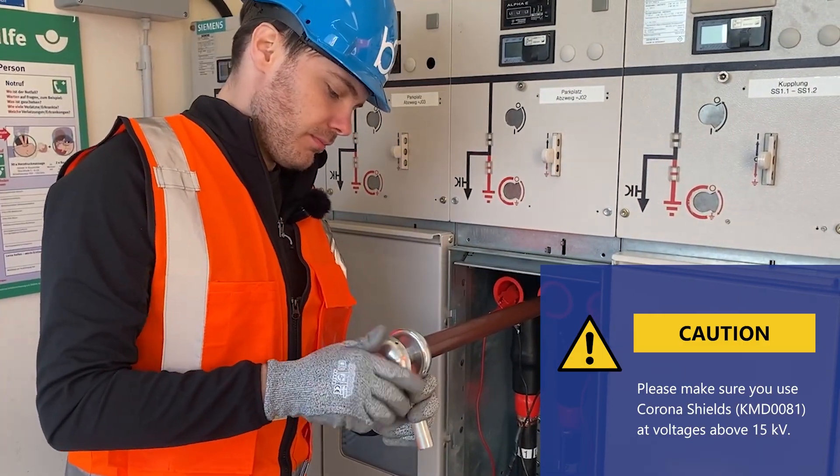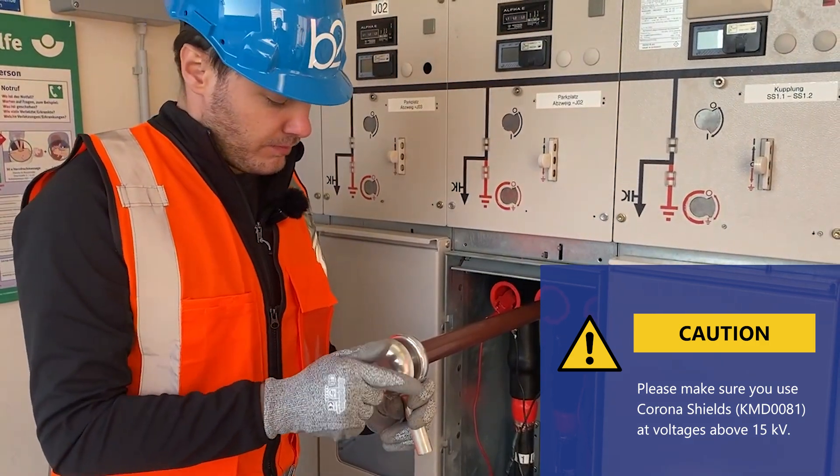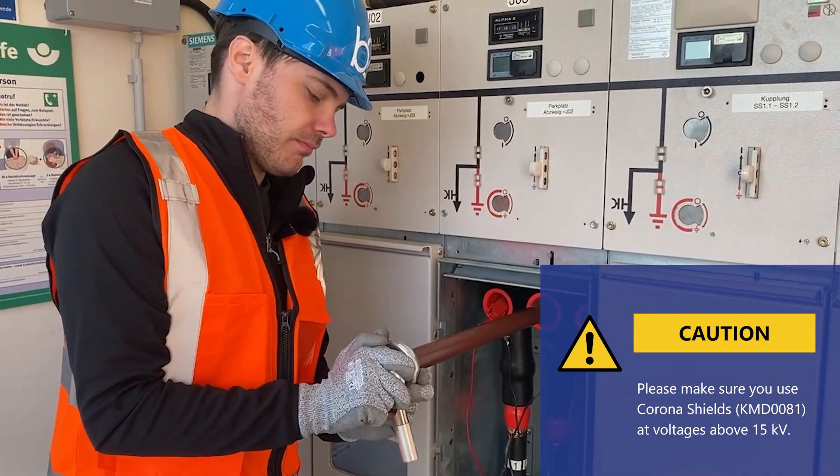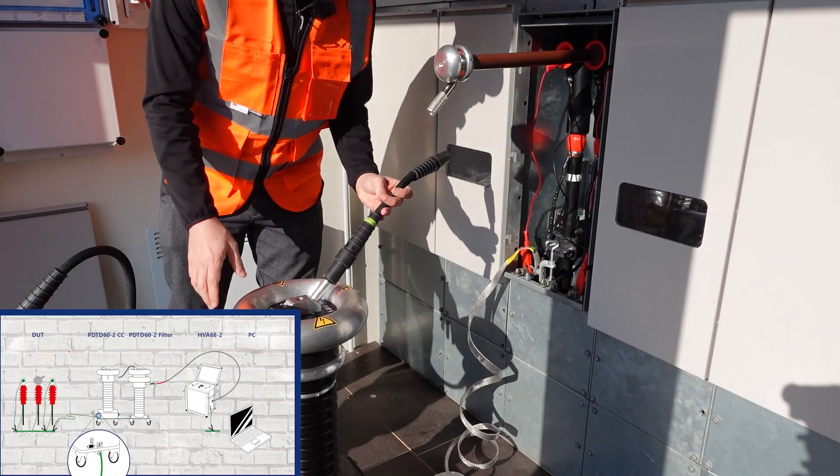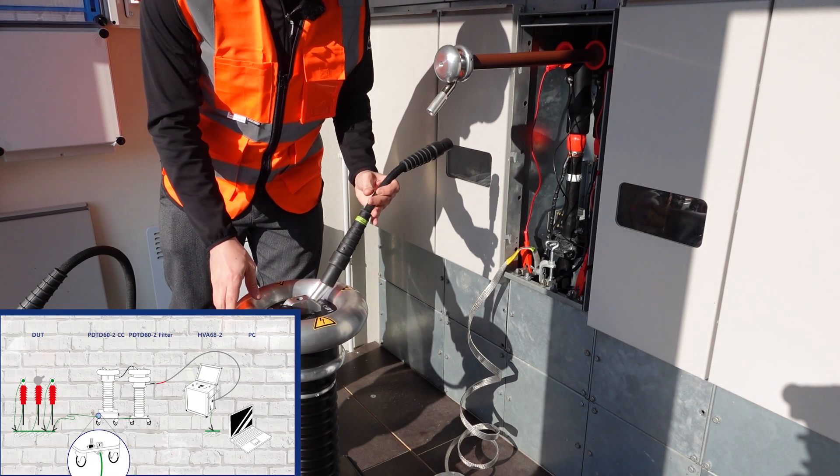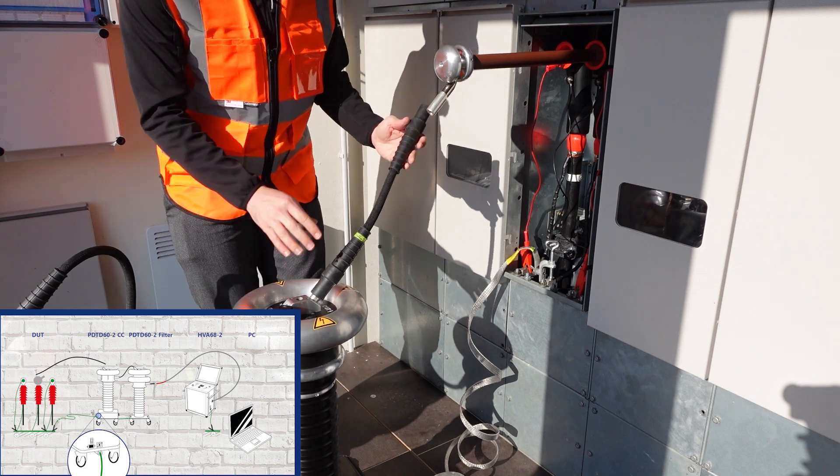In this case we use a GIS testing adapter. For voltages from 50 kV we recommend the use of Corona shields. The HV cable from the PDTD to the DUT.